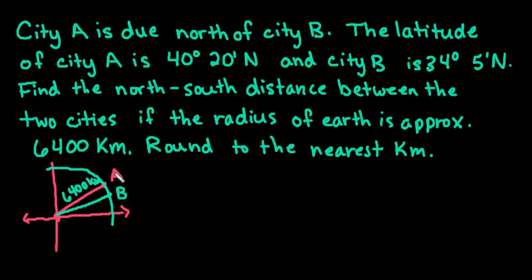So essentially what we are finding is we're trying to find the arc length between these two cities. So since the earth is rounded, we are finding an arc length. So if you recall, the arc length is found by taking the radius times the angle measure where theta is in radians.